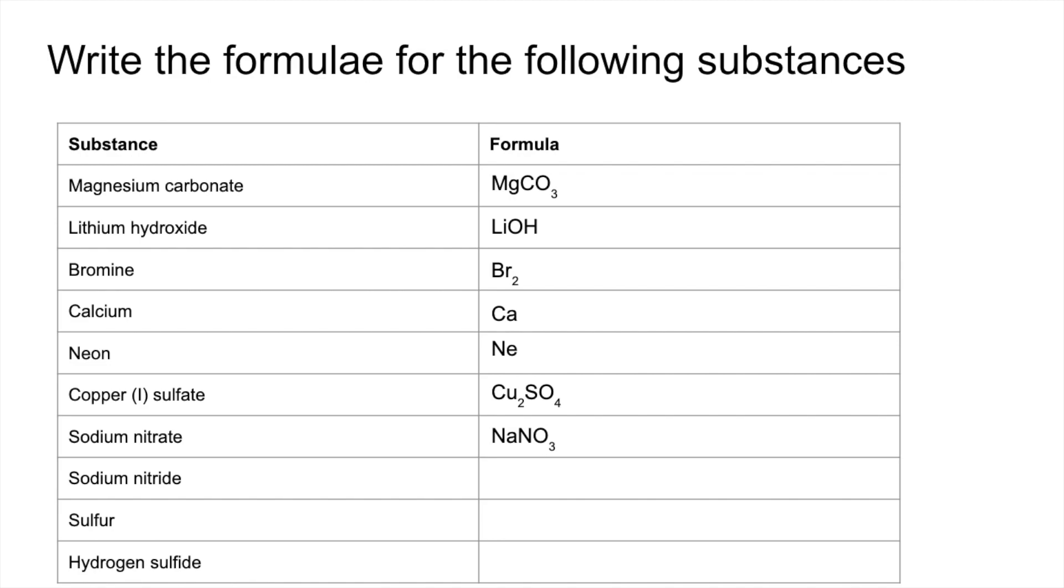Sodium nitride. Again we've got Na+. The nitride ion is N^3-. It's just the ion of nitrogen, so it's got that 'ide' ending, as opposed to 'ate' for the one above. The ratio is going to be 3 to 1, three sodium ions for every nitride ion, so it's Na3N.